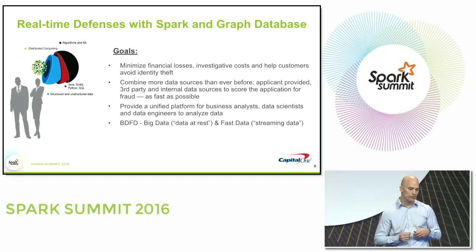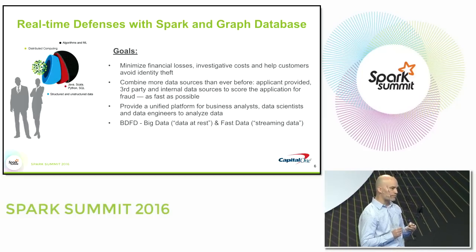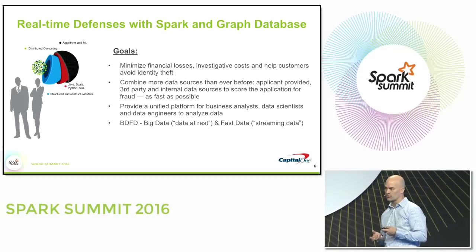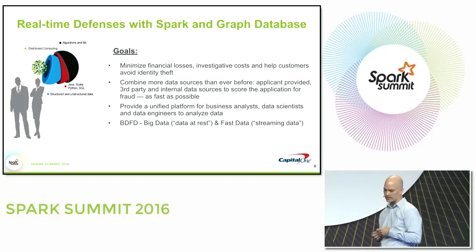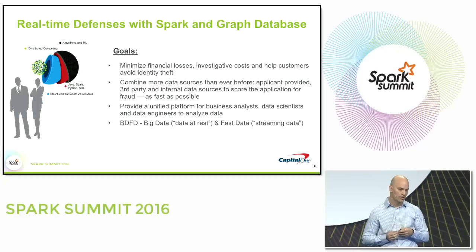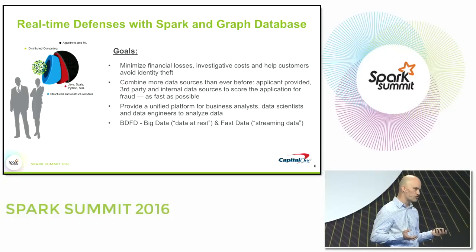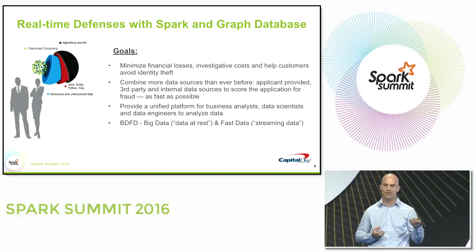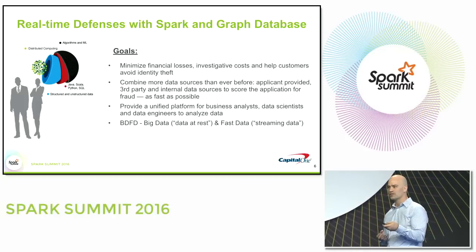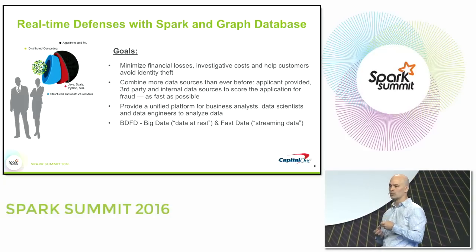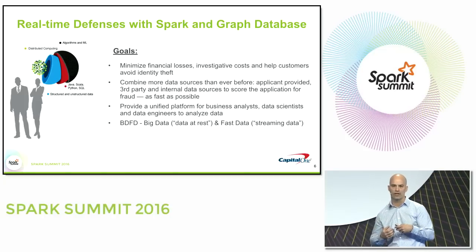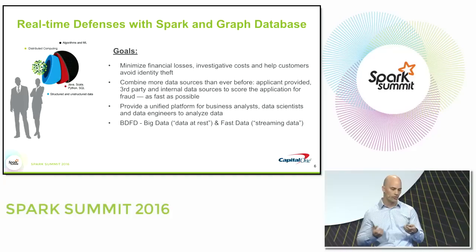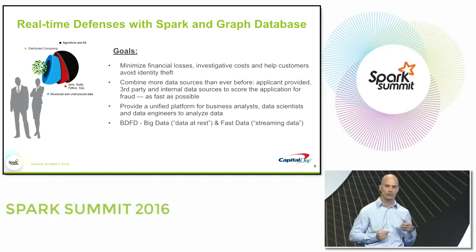Our goals are to reduce investigative costs and help protect customers against identity theft. With Spark and big data, we're able to combine data from more sources — the data provided by the applicant, combined with data from credit bureaus and internal Capital One data — to classify an application as fraud or not fraud as quickly as possible. The goal is to have a reliable fraud score prior to shipping that plastic out to the individual.